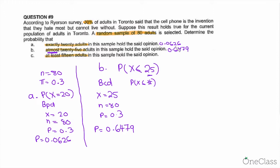Moving on to question C. The question is, at least 15 adults. At least means probability of X greater than or equal to 15. Since in BCD, the formula is probability of X less than or equal to a number, we need to use a different approach.